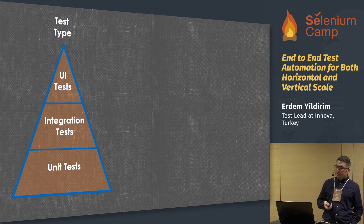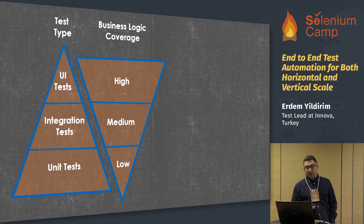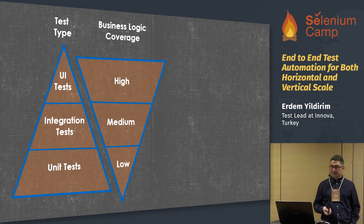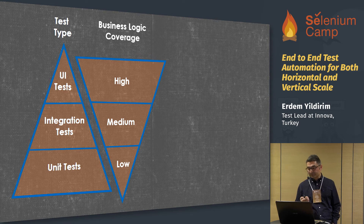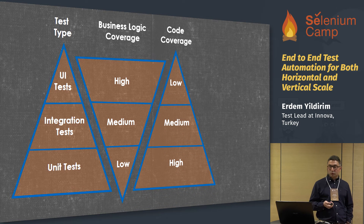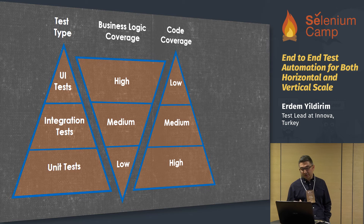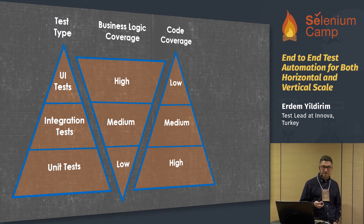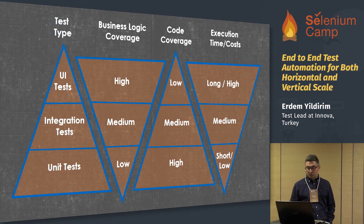Let's have a look at the advantages and disadvantages based on test types. If you want to cover business logic with your tests, UI test automation is the right choice. If code coverage is more important, then you should perform unit test automation first. For short execution time and low costs, you can prefer unit tests.